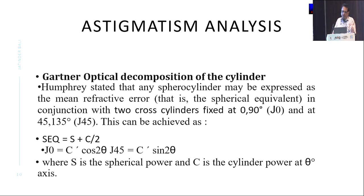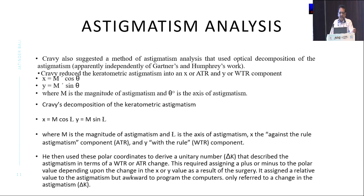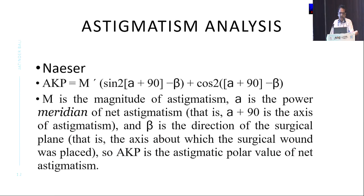Different optical decomposition methods of the cylinder were described. The first was Gartner, then Humphrey, who said you take it at 0°, 90°, and 45°, 135°. Subsequently, Cravi gave his own rule using cosine and sine methods. And then we came to Nasser's method, which described three main methods — the first again based on sine and cosine.